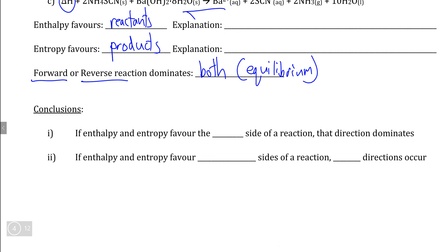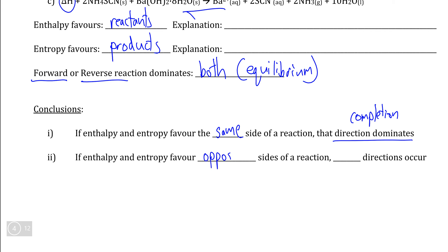So, the conclusions from this: if enthalpy and entropy favor the same side of the reaction, that direction dominates and we get the reaction going to completion in that direction. But if enthalpy and entropy favor opposite sides of a chemical reaction, we get both directions happening at the same time, and because both forward and reverse reactions can happen simultaneously, this is the situation where we can get a dynamic equilibrium.